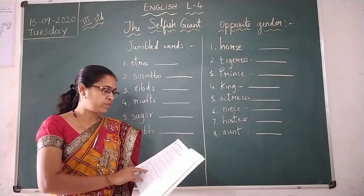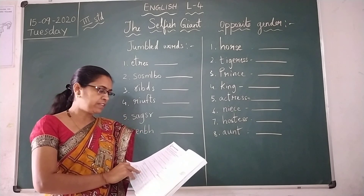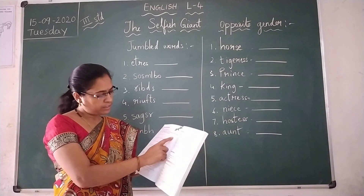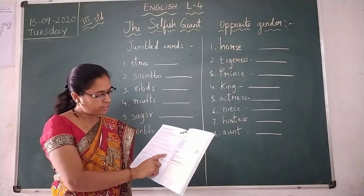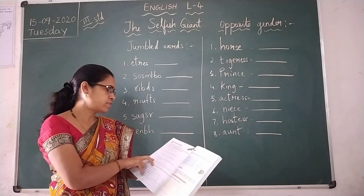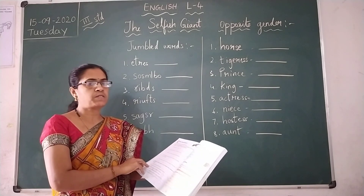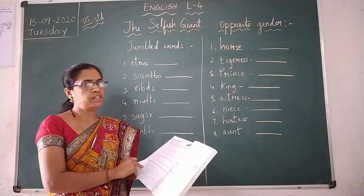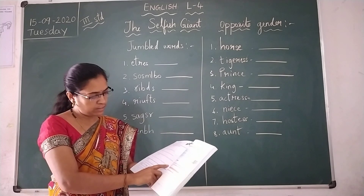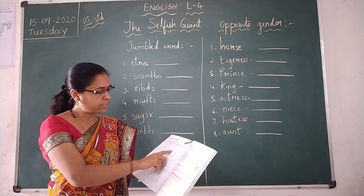Correct the wrong statements. You have to tick the correctness and mark the wrong statement. Later you can write the corrected sentence in your notebook. So just tick whether it is correct or wrong.